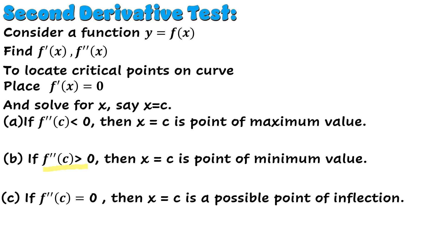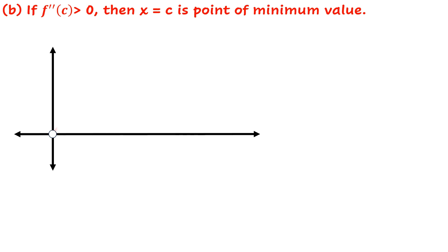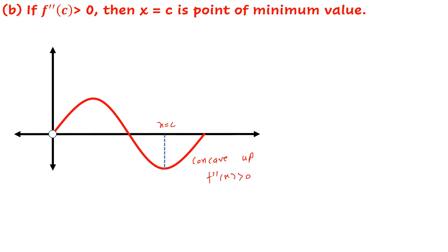Now we come to the second case: when f''(c) is positive. We draw the graph of a portion of a curve to explain this case. We take the point x = c and note that around this point the curve is concave up, so the second derivative is positive. Also note that at x = c the value of the function is the lowest point on the curve — that is, the function has a minimum value. So if f''(c) > 0, that point is a point of minimum value.